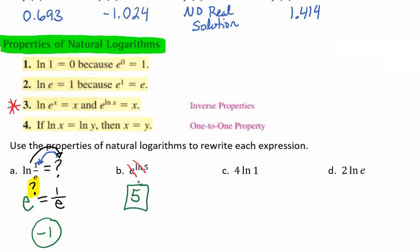For example C, we have 4 times the natural log of 1. Using property 1, the natural log of 1 is 0. So we have 4 times 0, which equals 0.